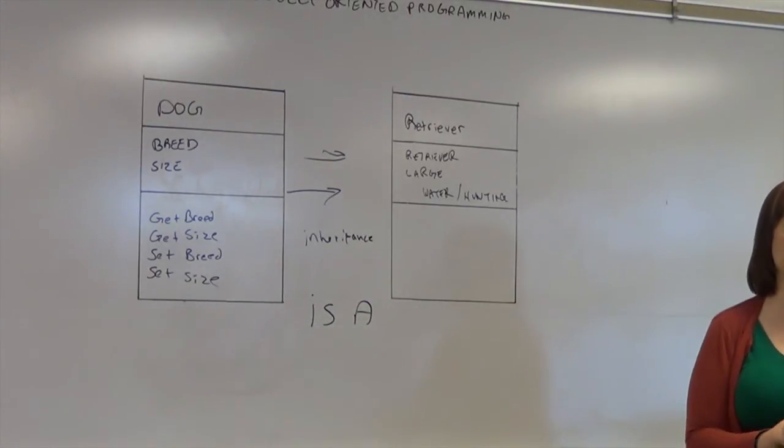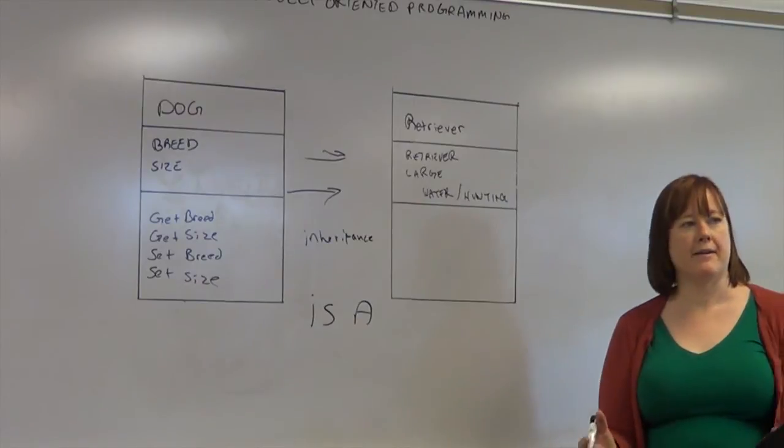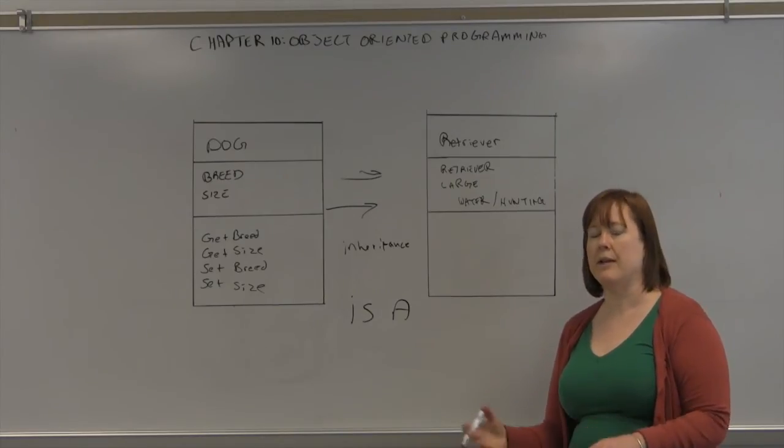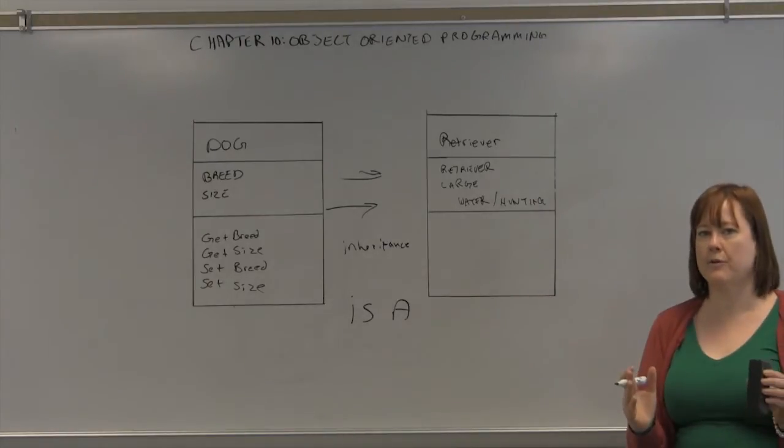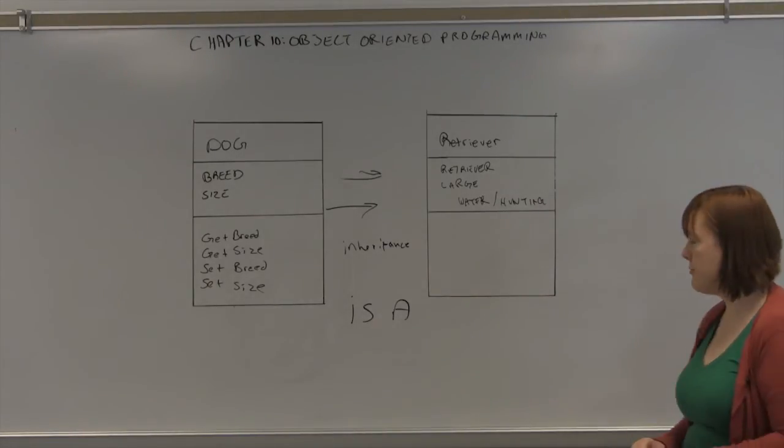And we can further define that class to like a circle. Because a shape would usually have a location on a grid. And it would also have a line thickness and a fill color. But then you can further define it by a square, a circle, a triangle. And so you can take those basic characteristics, add more characteristics to it, and you can extend those programming concepts.